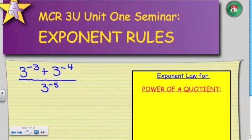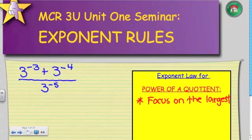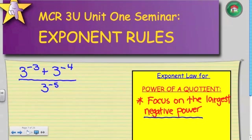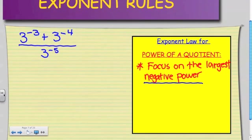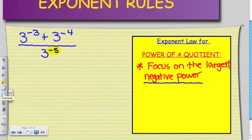So whenever you have a question like this, you have to focus on the largest negative power. For this particular example, the largest negative power is going to be 3 to the power of negative 5.